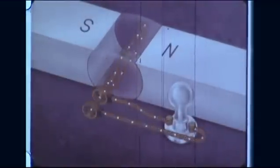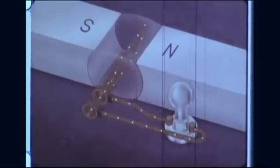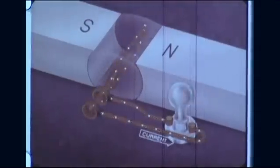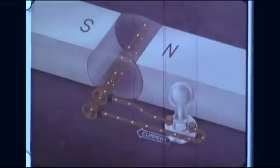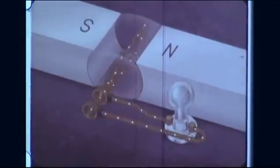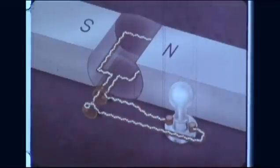We must continue to rotate the coil in the magnetic field if we want the electric current and voltage to continue. Let's examine this rotation more closely to see how a generator works and to understand the nature of alternating current. In a simple generator connected to an electric light, the greatest current is produced when the conductor passes through the magnetic lines of force at the fastest rate. This occurs when the conductor moves at right angles to the field.